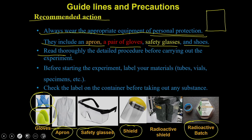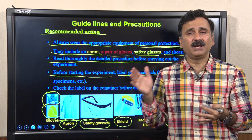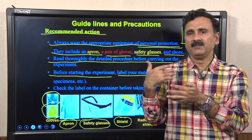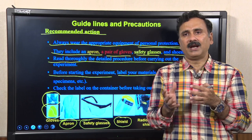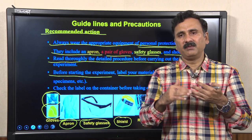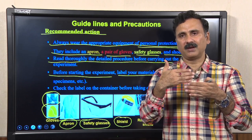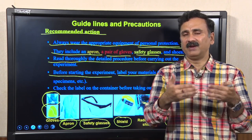Before you plan the experiment, you have to read the procedures very thoroughly so that you know what procedure is required and what equipment is needed. Before starting the experiment, you have to label your materials — for example, eppendorfs, falcons, or beakers — so there is no mismatch. Without labeling, you might forget and report that you added material X when you actually added material Y, making it impossible for others to replicate, and your documentation will be very compromised.